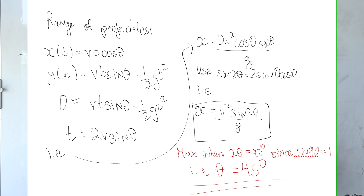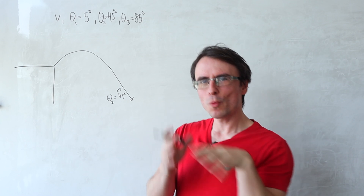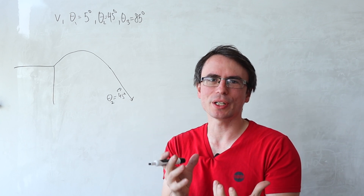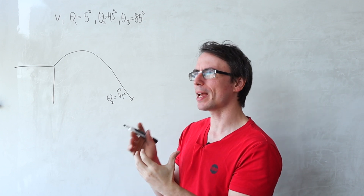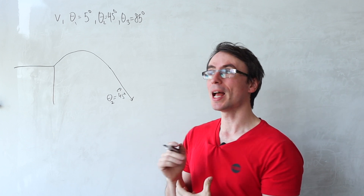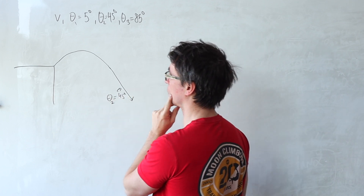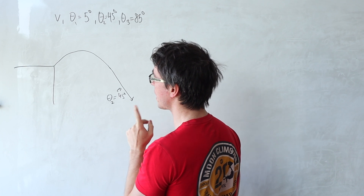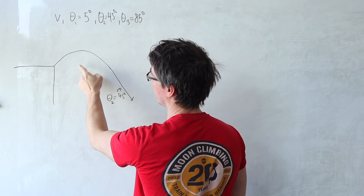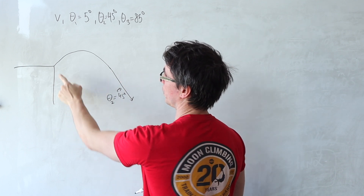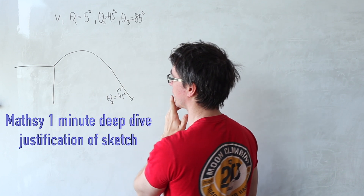Why does 45 degrees have the longest range? This is a classic projectile motion result. To understand the other two angles, we must compare the vertical height with the horizontal range. If the vertical height is a lot bigger it does one thing; if the horizontal range is a lot bigger it does another.